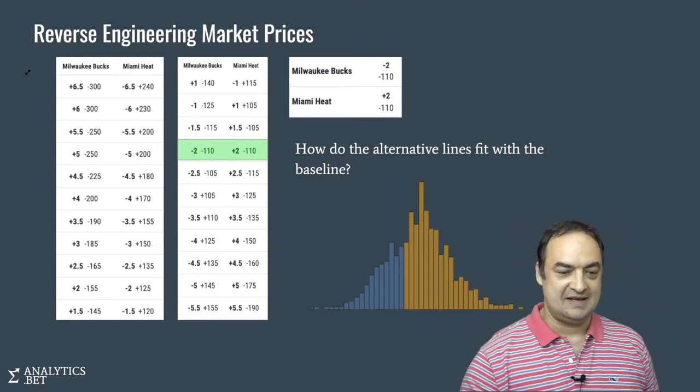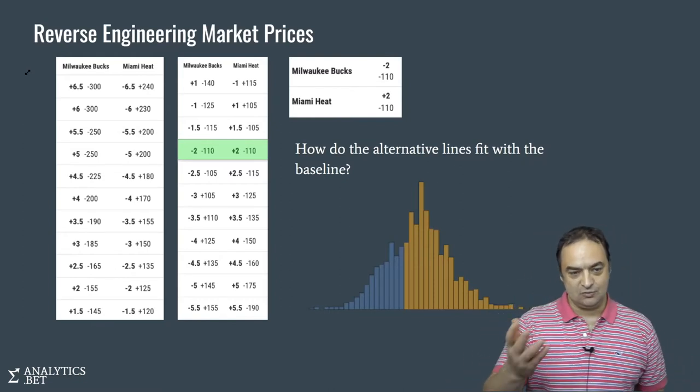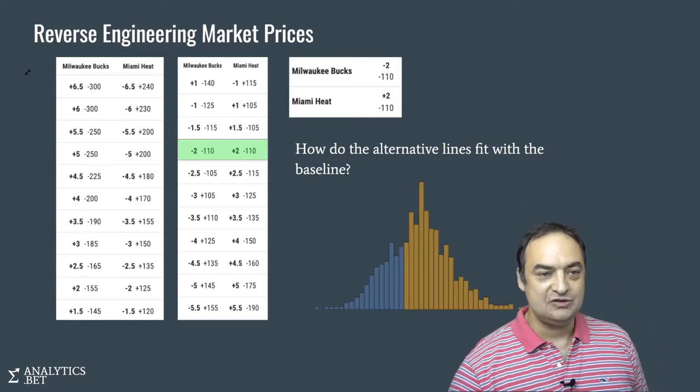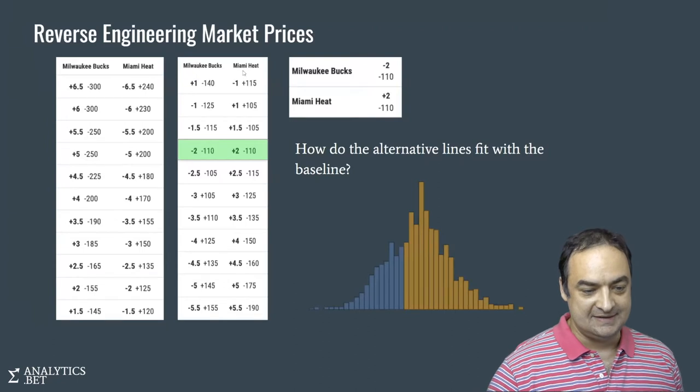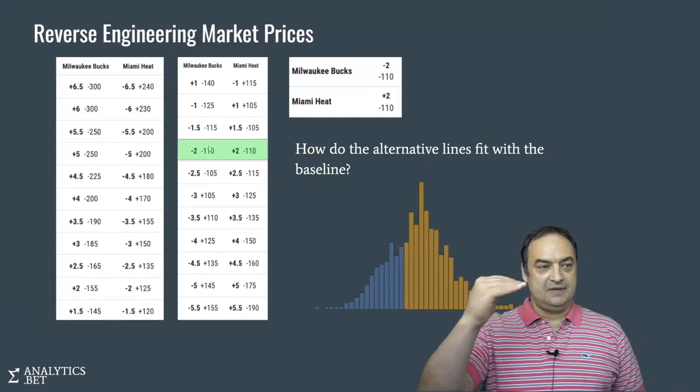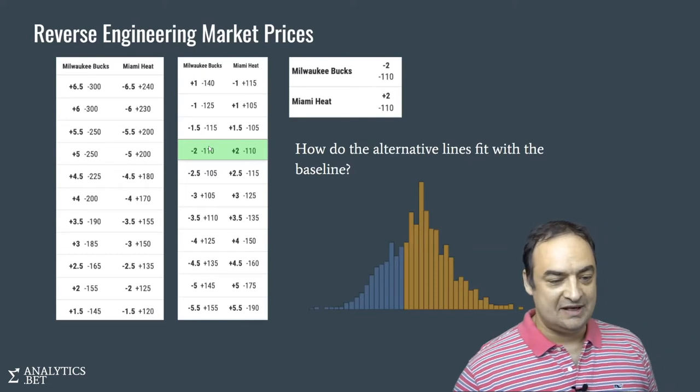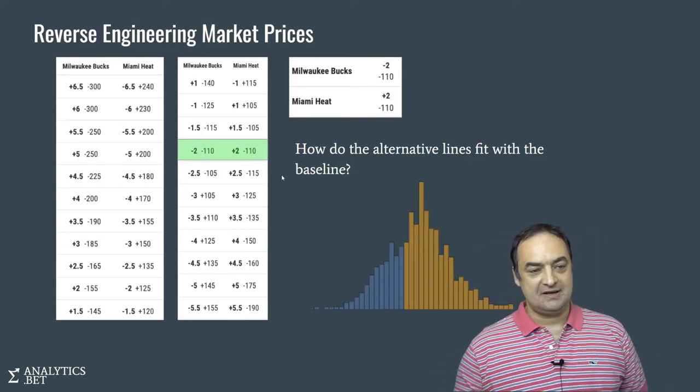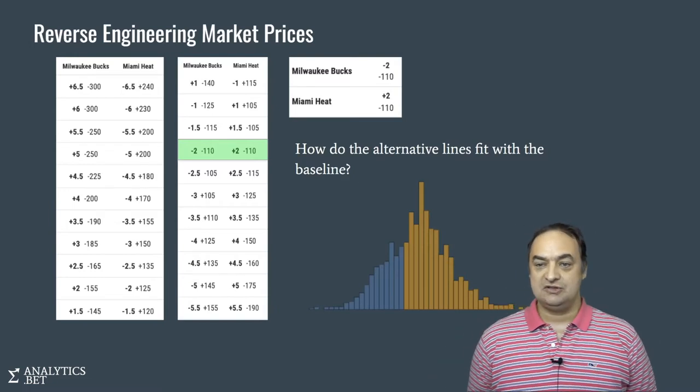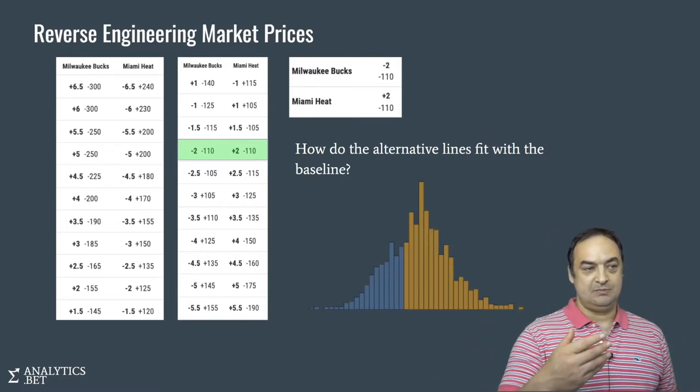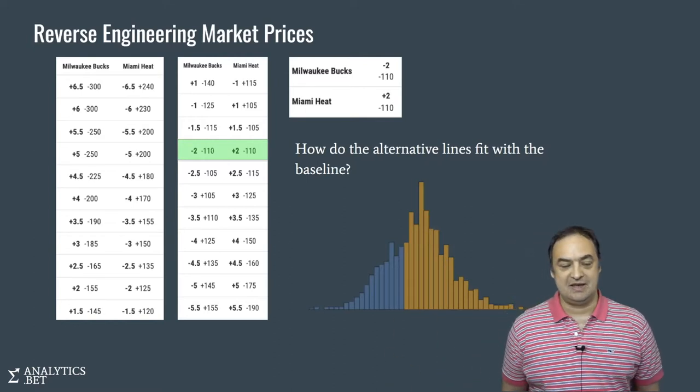So here's the example. You understand now what spreads are and money lines and over-unders. There is also such a thing as alternative lines. If you're looking at this game, the Bucks versus the Heat, the straight line, the minus two with the minus 110 odds, means that the market effectively expects the Bucks will win the game by two points. Both sides have the same odds, minus 110.